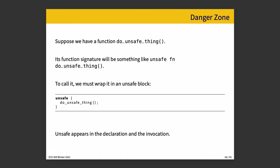Just as we saw with references and making them mutable, where the caller specifies they want mutability and the function signature also says it wants mutability, unsafe requires acknowledgement on both the declaration — in the function definition — as well as the invocation in the unsafe block. This is a form of readback.